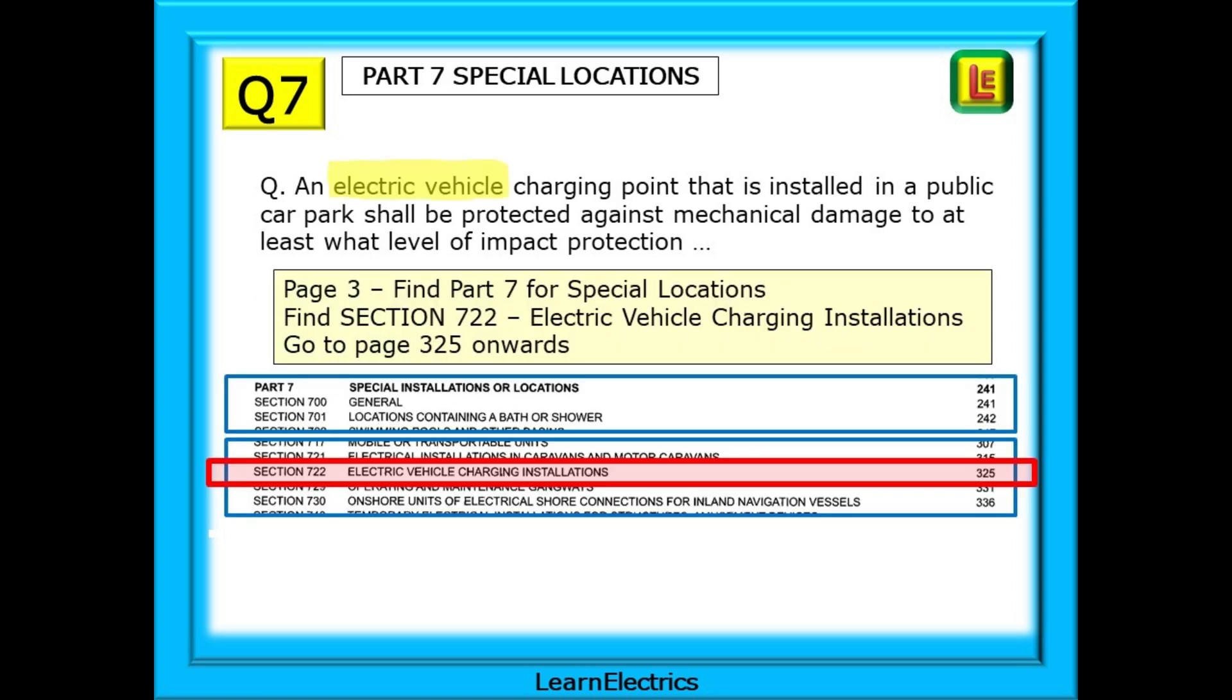The key word is obviously electric vehicles. So go to page 3 and scan down the special locations. Towards the bottom of the listing will be section 722 electric vehicle charging installations and a prompt to go to page 325 onwards.